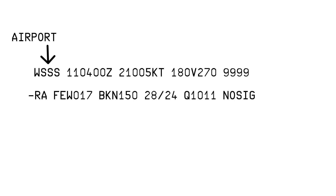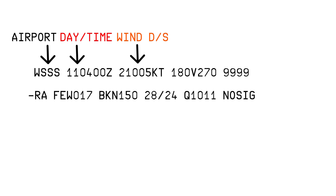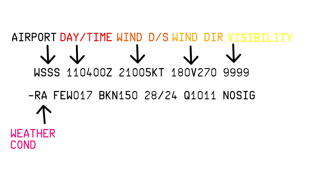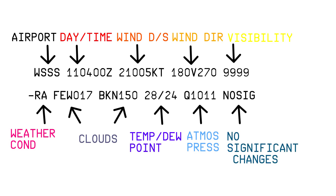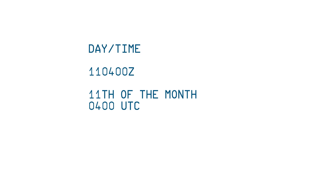We are going to take a look at Singapore Changi Airport's METAR. This is the airport code for Singapore Changi Airport, the day and time. Next is the wind speed and direction, then possible wind direction variability, then visibility, then weather conditions, then information for cloud layers, then temperature and dew point, then atmospheric pressure, and finally no significant changes expected for the next weather report.